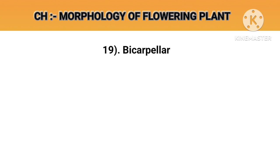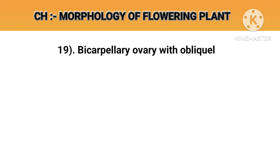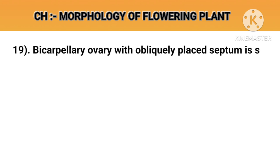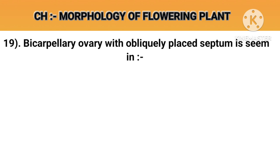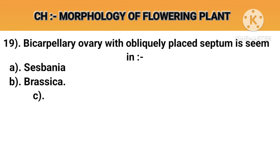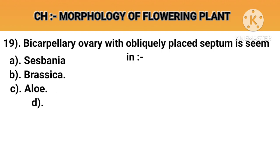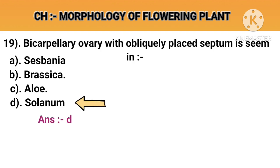Question number 19. Bicarpellary ovary with obliquely placed septum is seen in. Option A: Sesbania. Option B: Brassica. Option C: Aloe. Option D: Solanum. Answer D: Solanum.